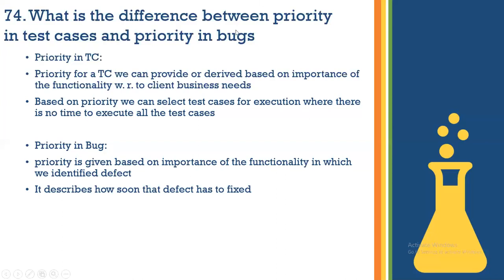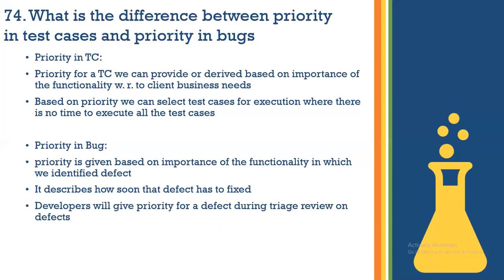Priority in a defect describes how soon that defect has to be fixed. So test case priority helps us determine how important a test case is for execution, while defect priority tells us how soon the defect has to be fixed. Generally, developers give priority to a defect during triage review meetings.